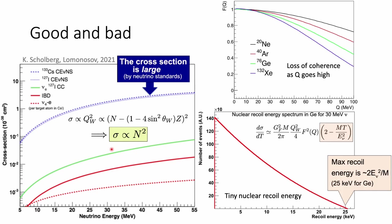Turning the equation into a plot, we can draw the cross-section as a function of the incident neutrino energy. Compared to nu-e, or neutrino-nuclear charged current interaction, the CEvNS cross-section is about a hundred or even a thousand times larger. The cross-section also becomes larger when the neutrino energy becomes larger. However, when the energy is too high, the form factor starts to decrease to account for the loss of coherence. A few tens of MeV is about the sweet spot.